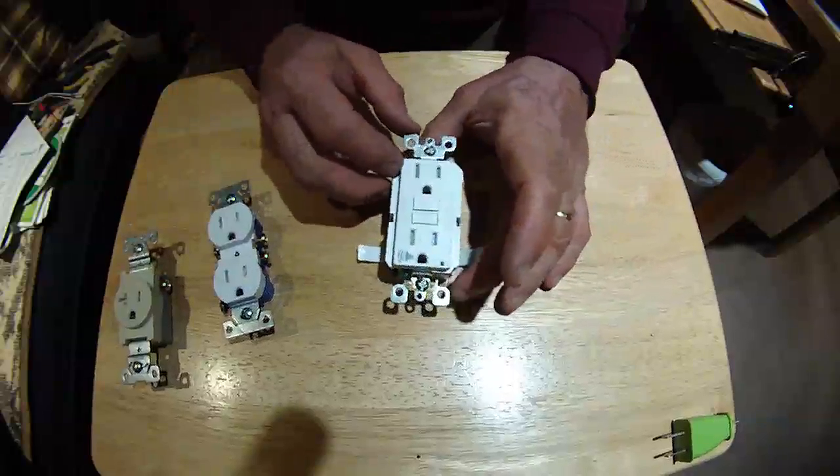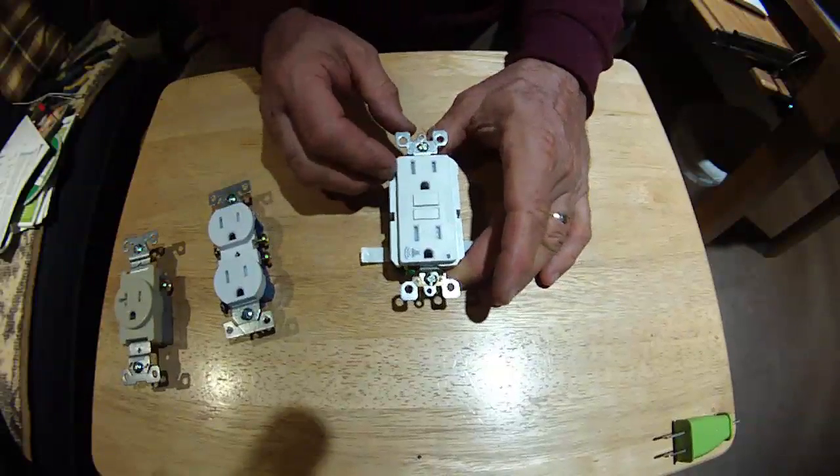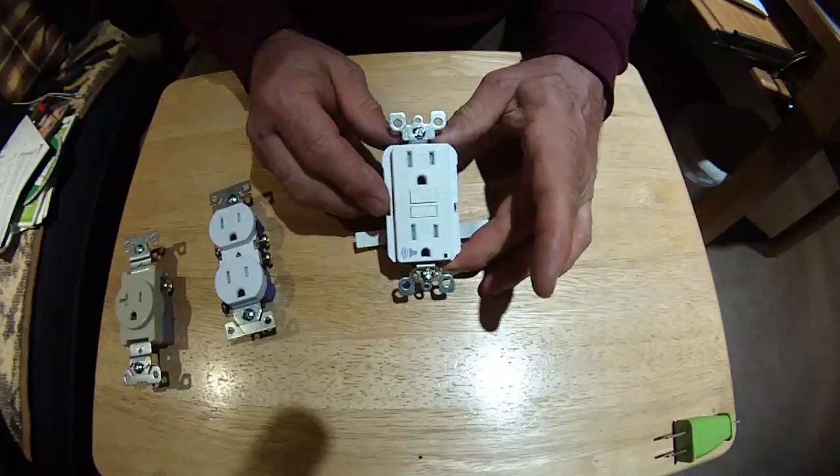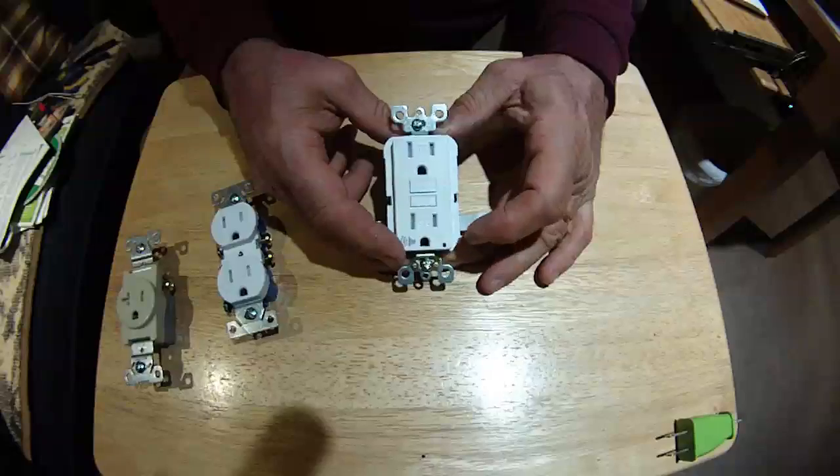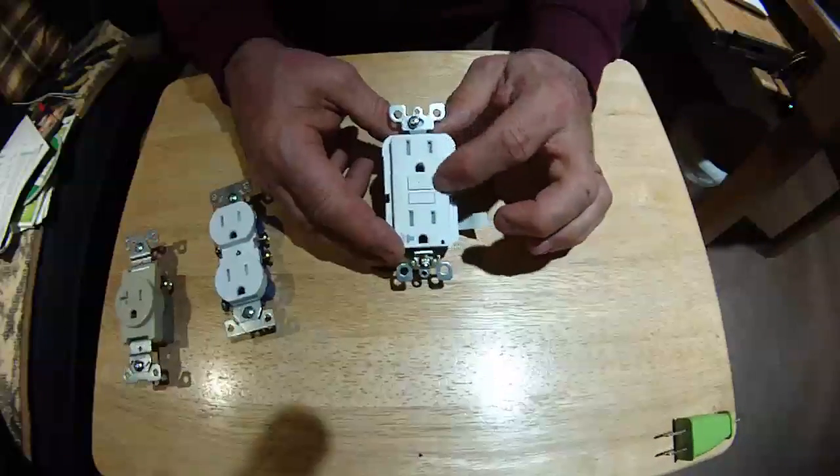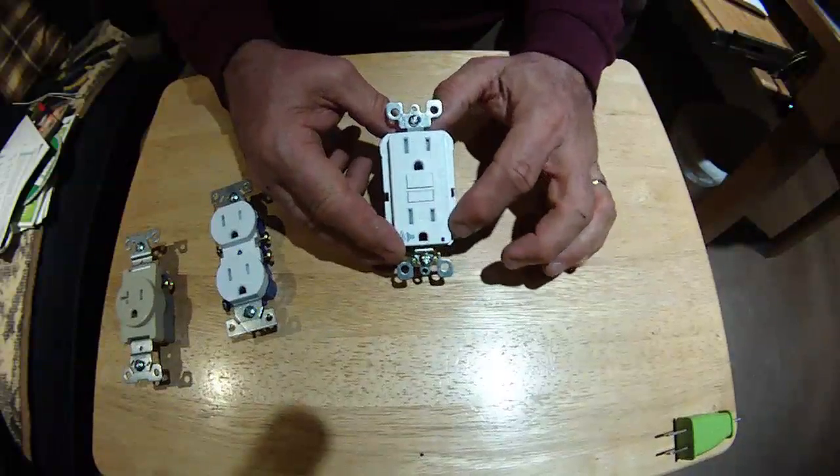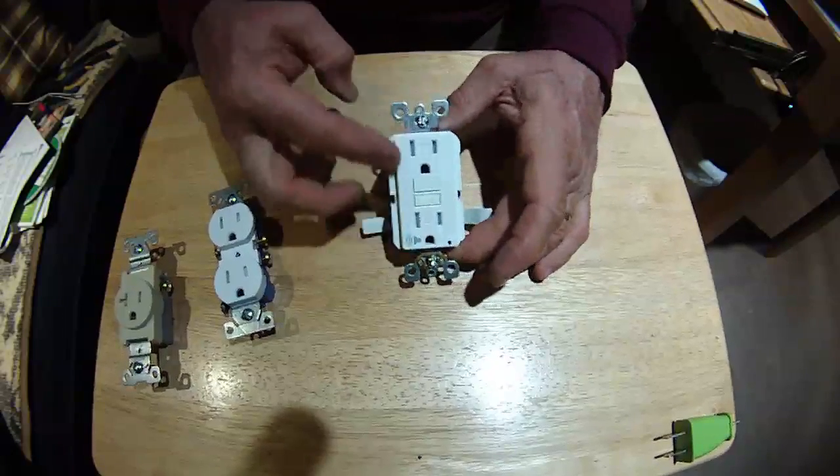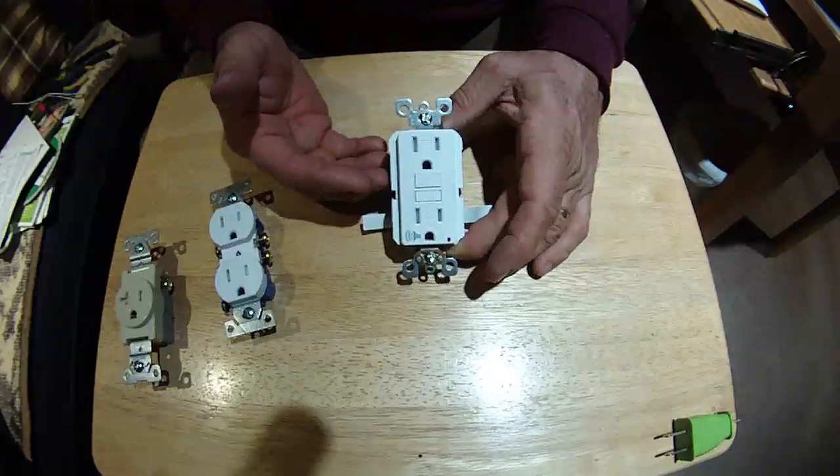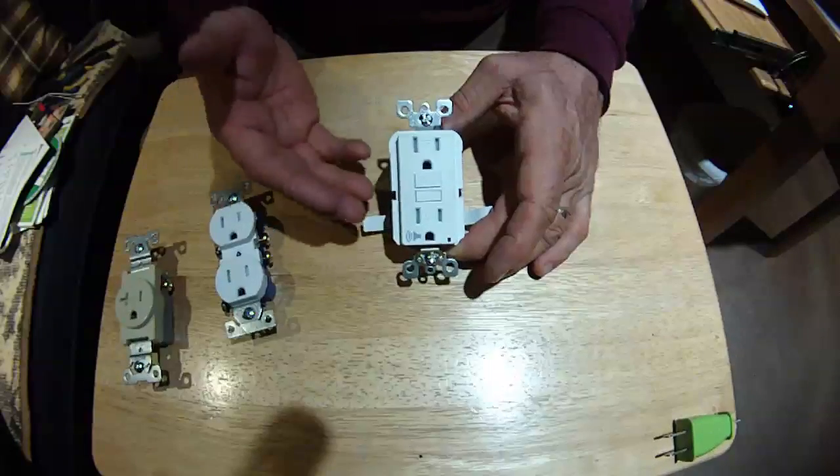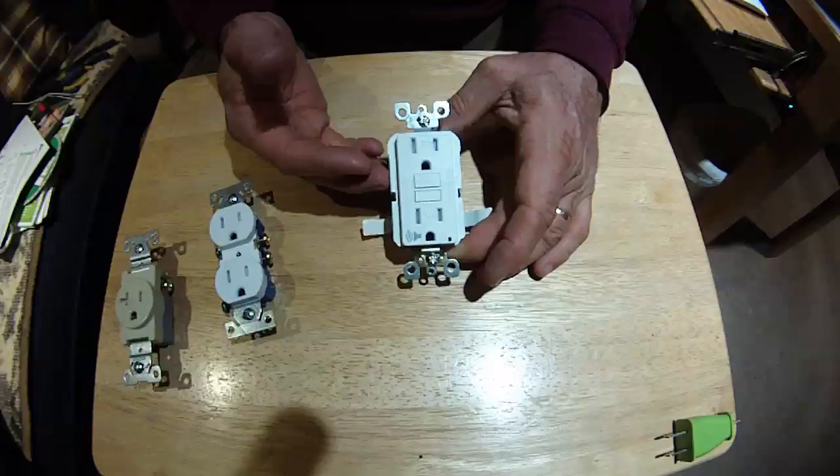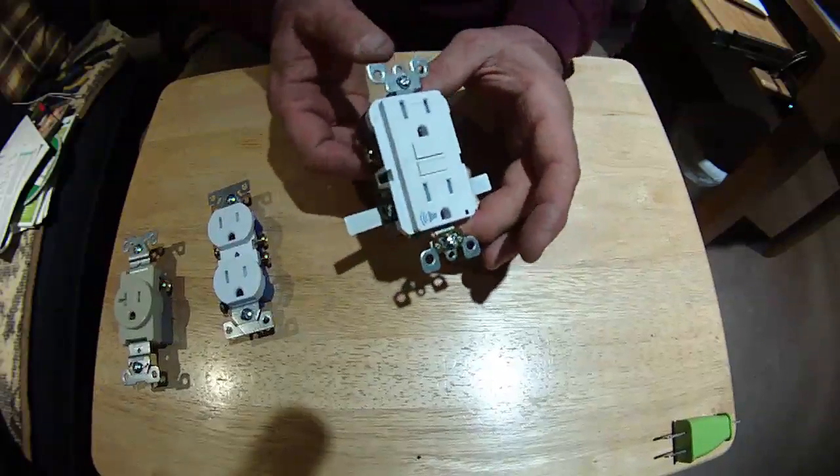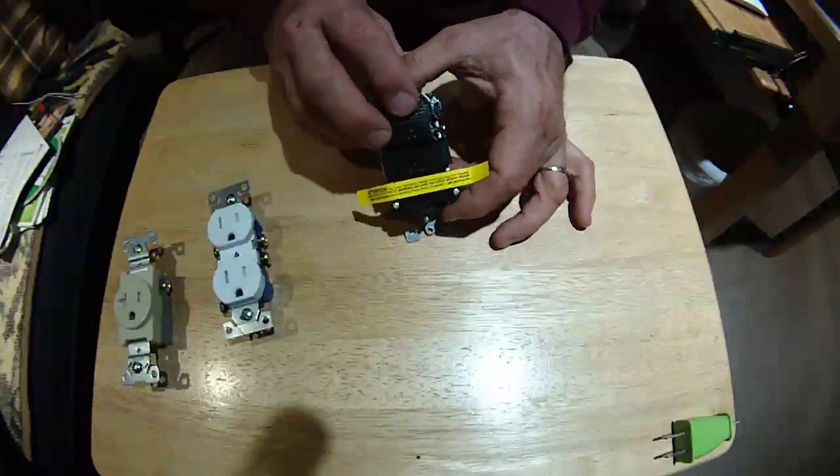Our GFI or GFCI - that would be ground fault interrupter or ground fault circuit interrupter; either one is appropriate - has a test and reset button here so I can check it, make sure it works every week. I've got a little indicator light that shows I have power, and this is an audible GFI. So I can put this on a sump pump or condensate pump, and when it trips it'll start buzzing and I'll hear that upstairs.